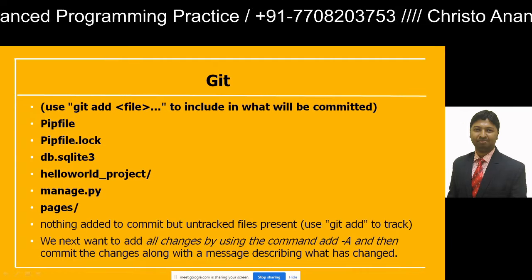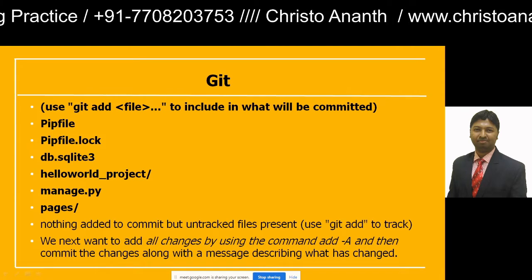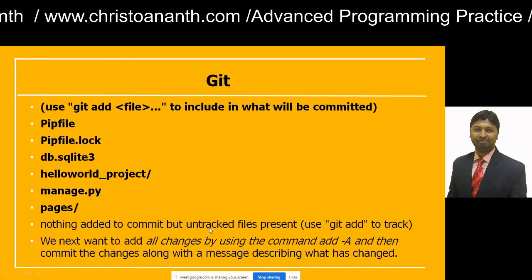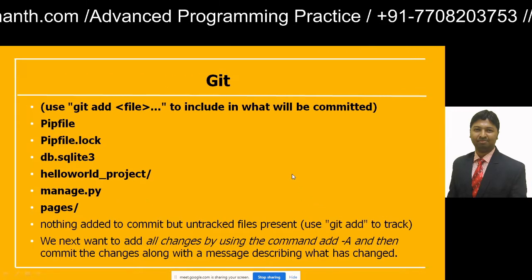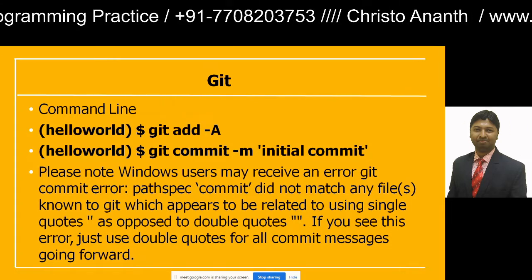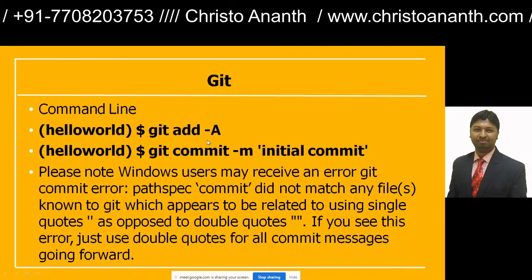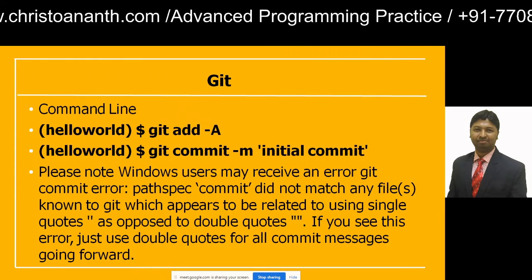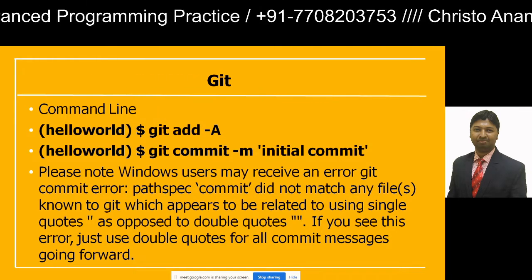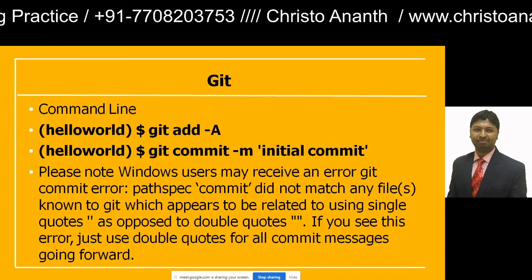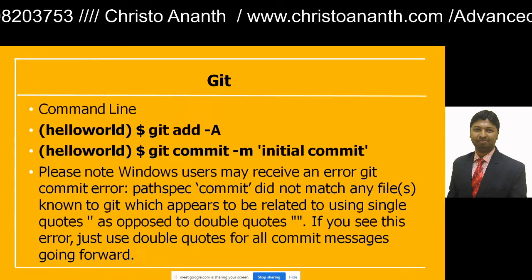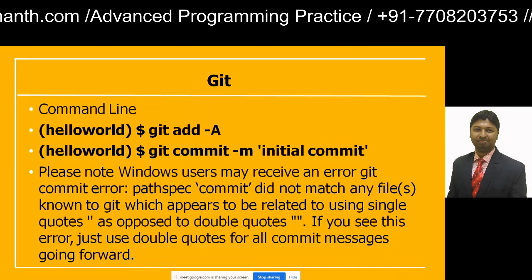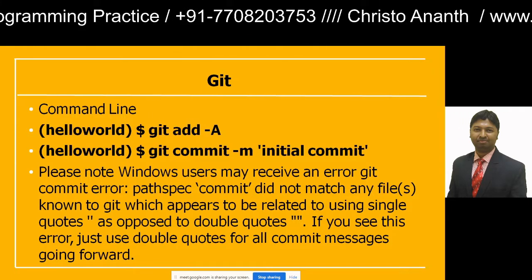Add all changes using git add -A, then commit the changes with a message describing what has changed. In the command line, run: dollar git add -A, then dollar git commit -m 'initial commit'. Note that Windows users may receive an error like 'paths with commit not matching any files known to git' — this is related to using single quotes instead of double quotes. If you see this error, just use double quotes instead of single quotes for the commit message.